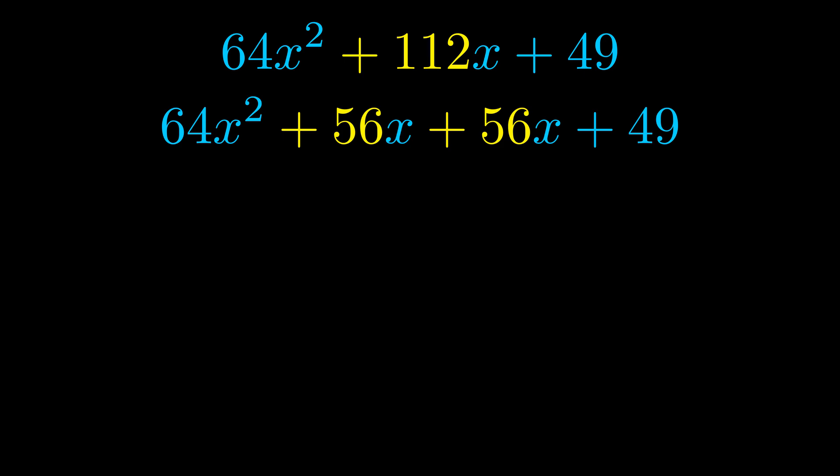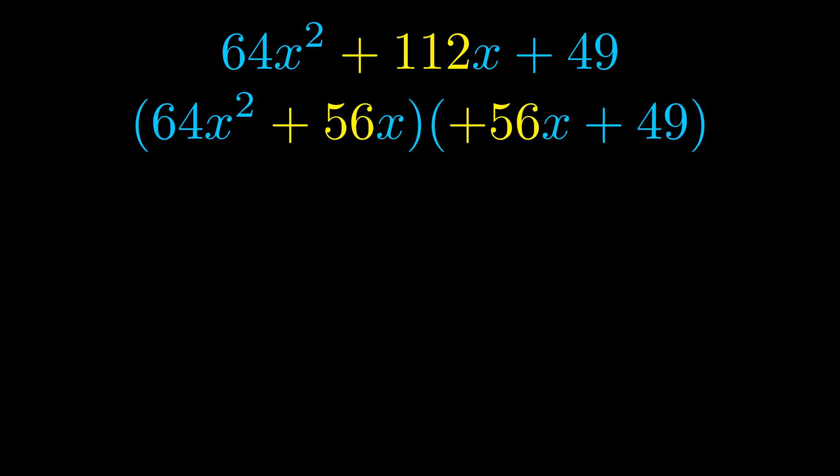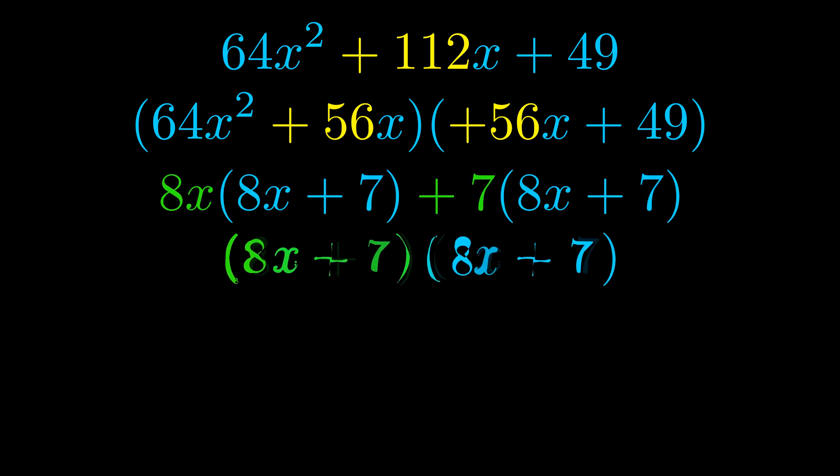Once we've done this we go ahead and put parentheses around the first term and the last term. And we do that so that we can take the greatest common factor out of both terms. We can see the greatest common factor is now outside in green. Notice also how what remains inside of the parentheses is the same in both cases. The blue values are the same.